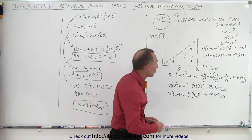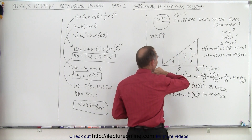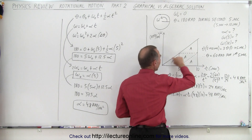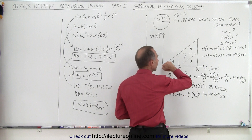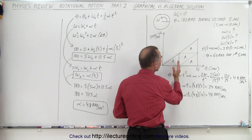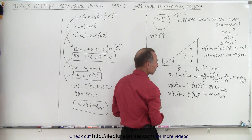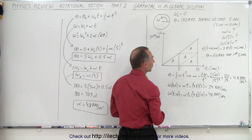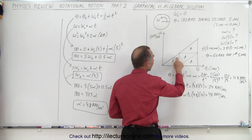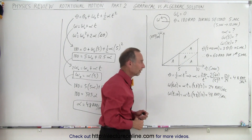If we graph this on an angular velocity versus time graph we get a straight line whose slope is equal to the angular acceleration. Notice that the distance traveled during the first five seconds must be only one-third the distance traveled during the second five seconds, which can be shown geometrically. Therefore, if the angular distance during the second five seconds is 180 radians, the angular distance during the first five seconds must be one-third of that, or 60 radians.